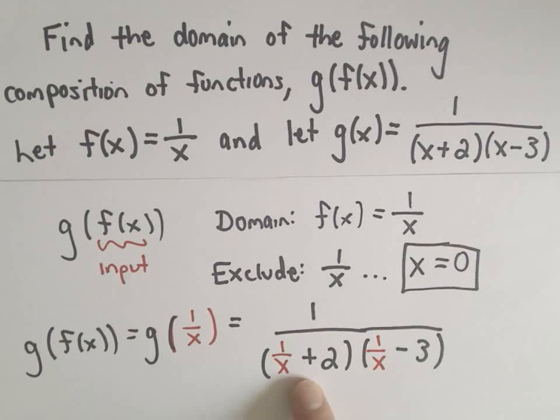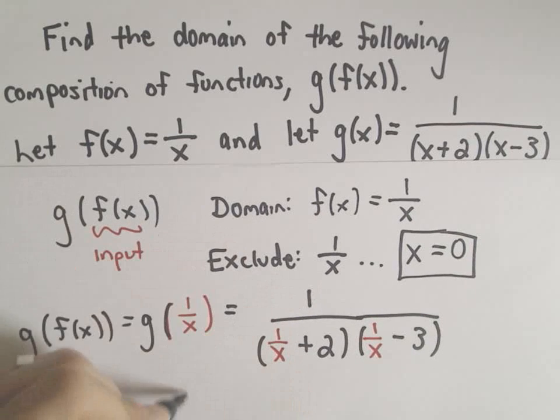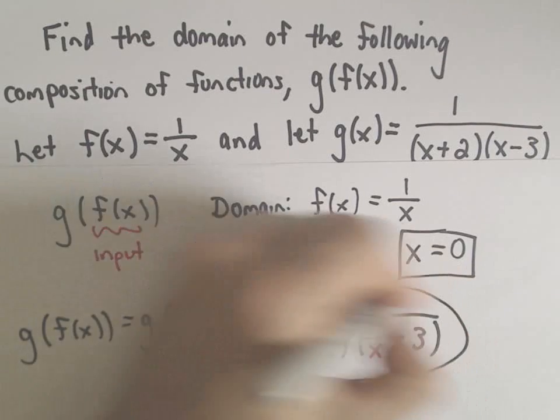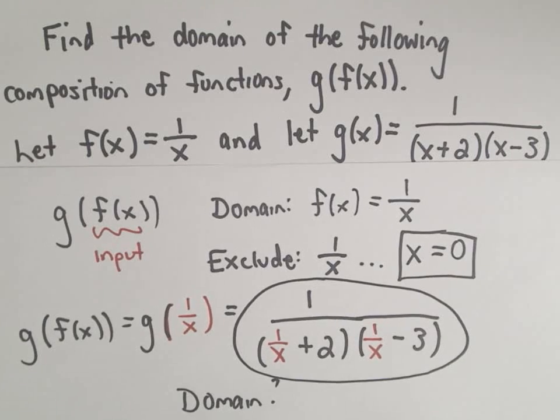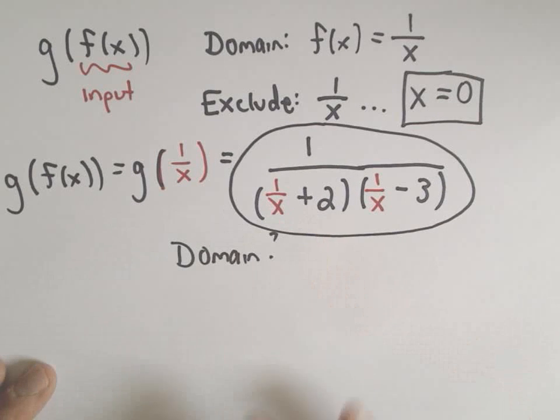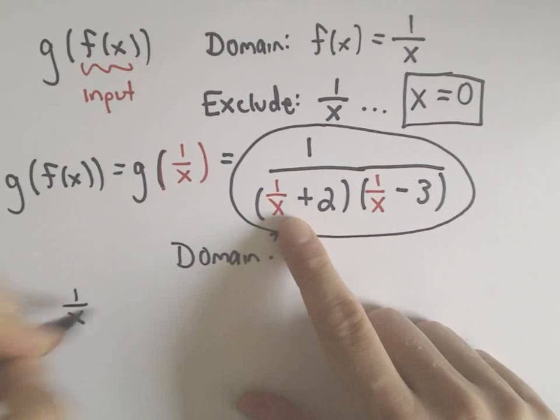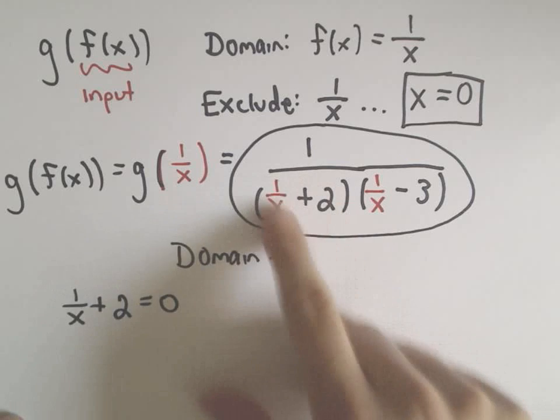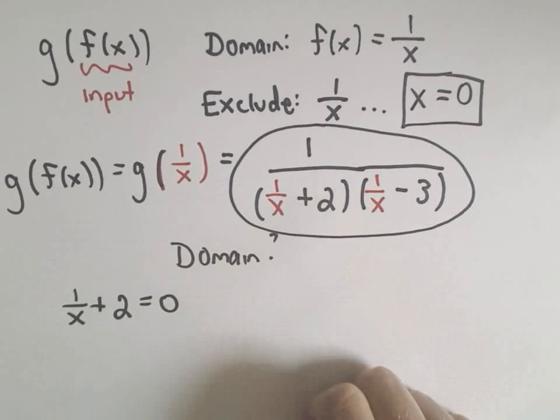We could always simplify this down a little bit if we wanted to. I'm going to kind of just leave it like it is. And I'm going to think about what's the domain of this new function now? It's bad if we divide by 0. We don't want that to happen. So what I need to do is I need to solve the equation 1 over x plus 2 equals 0. I'll figure out what value, if any, makes the first factor in the denominator 0, and then we'll exclude that value.